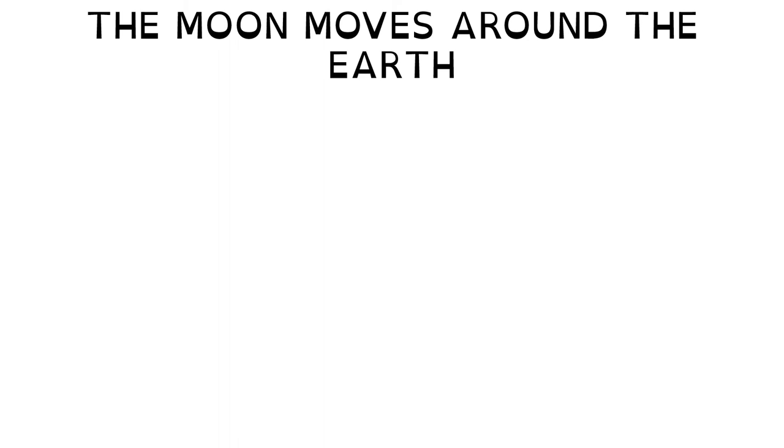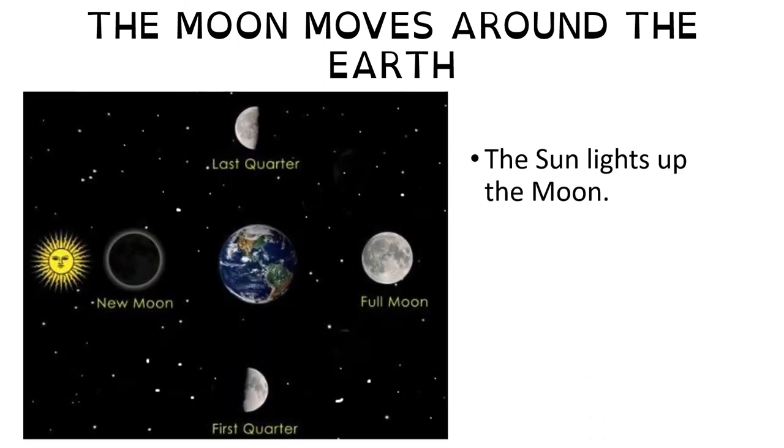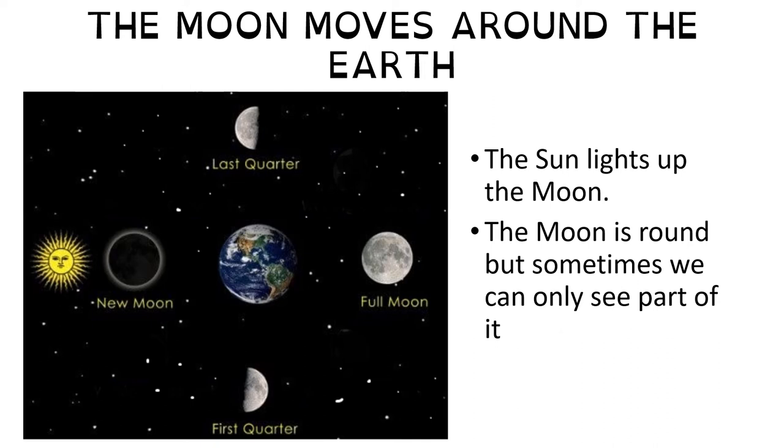The Moon moves around the Earth. In the picture you can see that the Sun lights up the Moon. The Moon is round, but sometimes we can only see part of it. If you take a look at the picture on the left, you will see the names the Moon has in each phase.